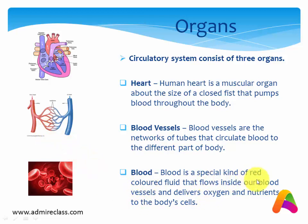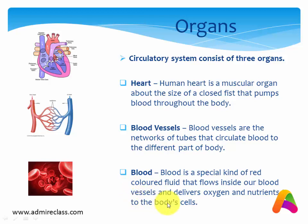Now the next one is blood. Blood is a special kind of red-colored fluid — fluid means liquid — that flows inside our blood vessels and delivers oxygen and nutrients to the body's cells. So blood is a special red-colored fluid that flows inside our blood vessels and delivers oxygen and nutrients to our body's cells.